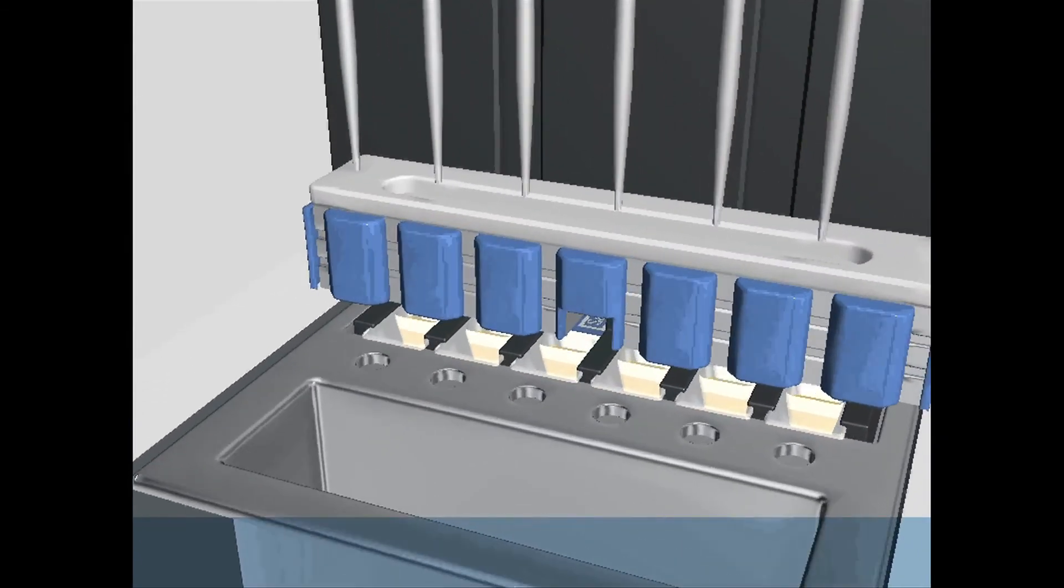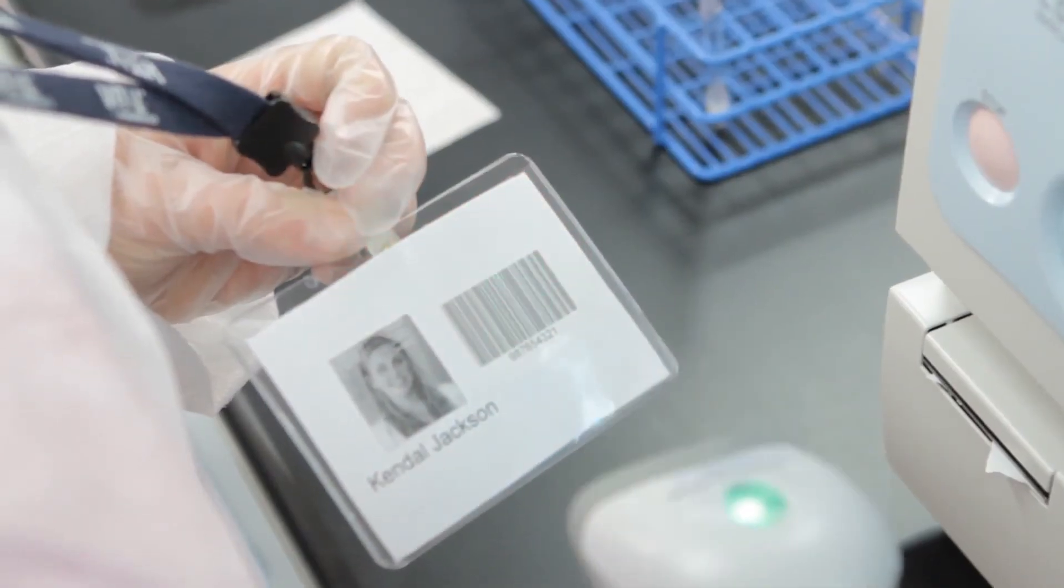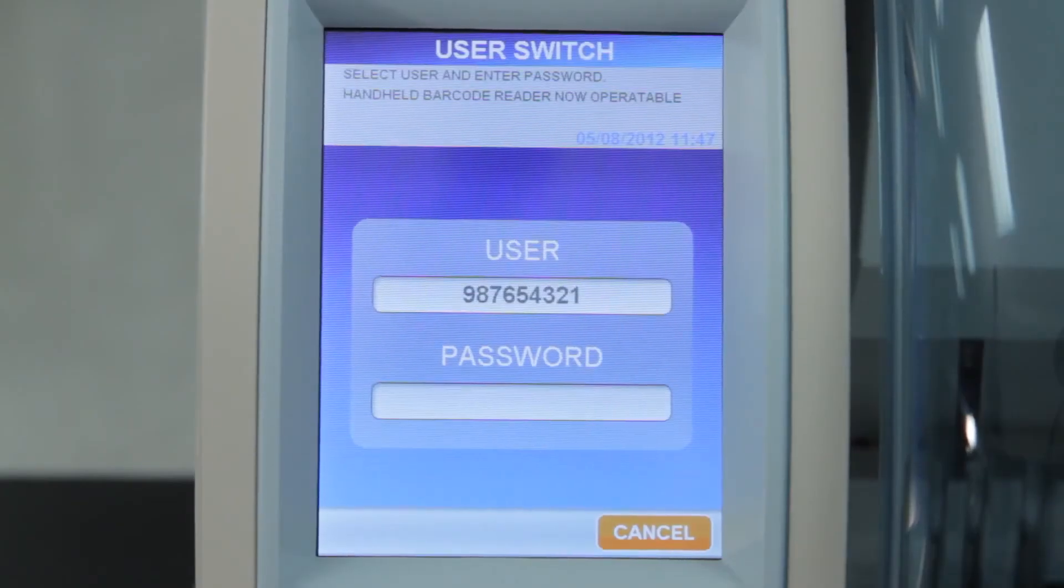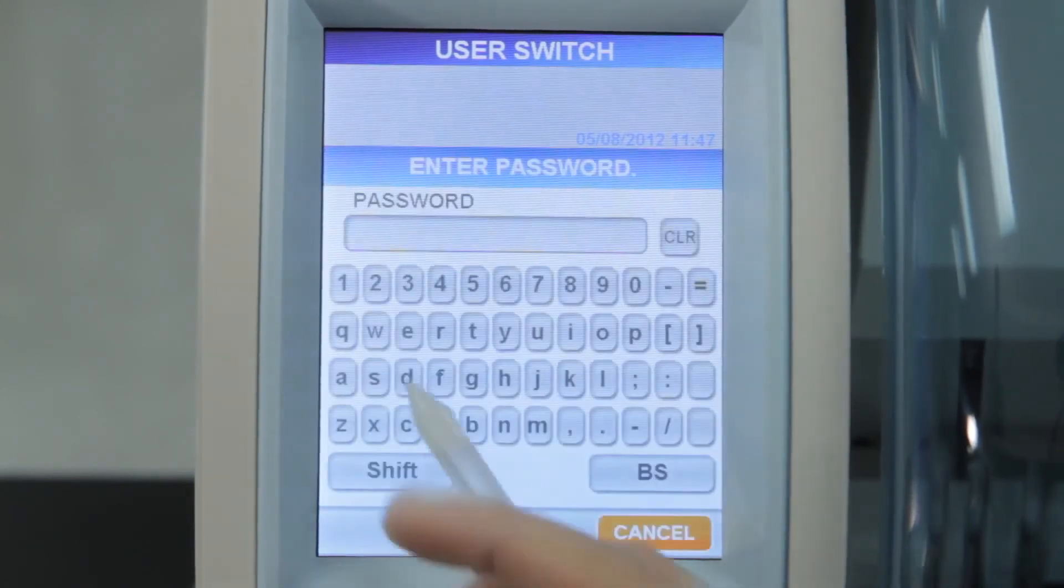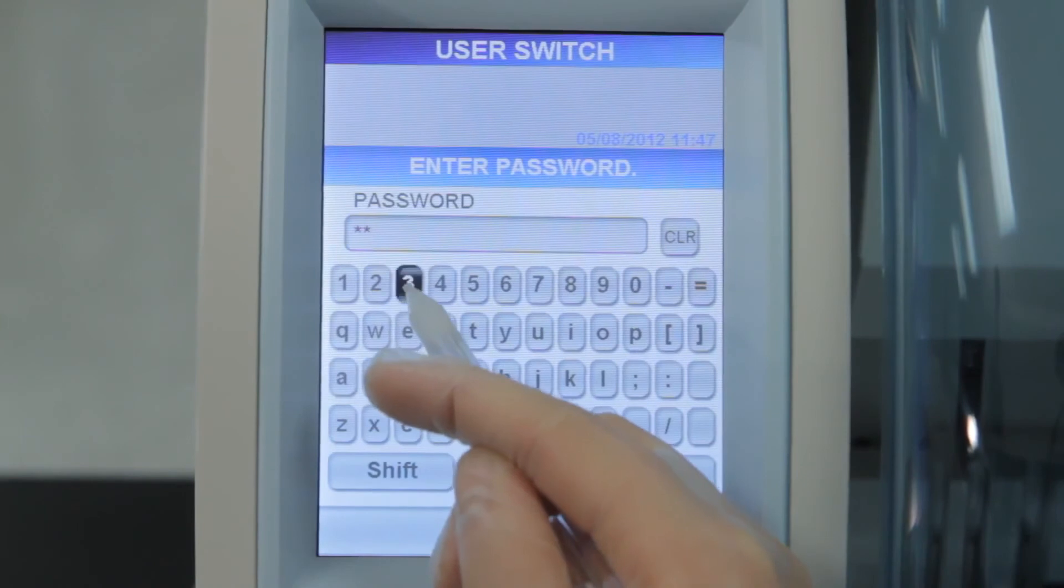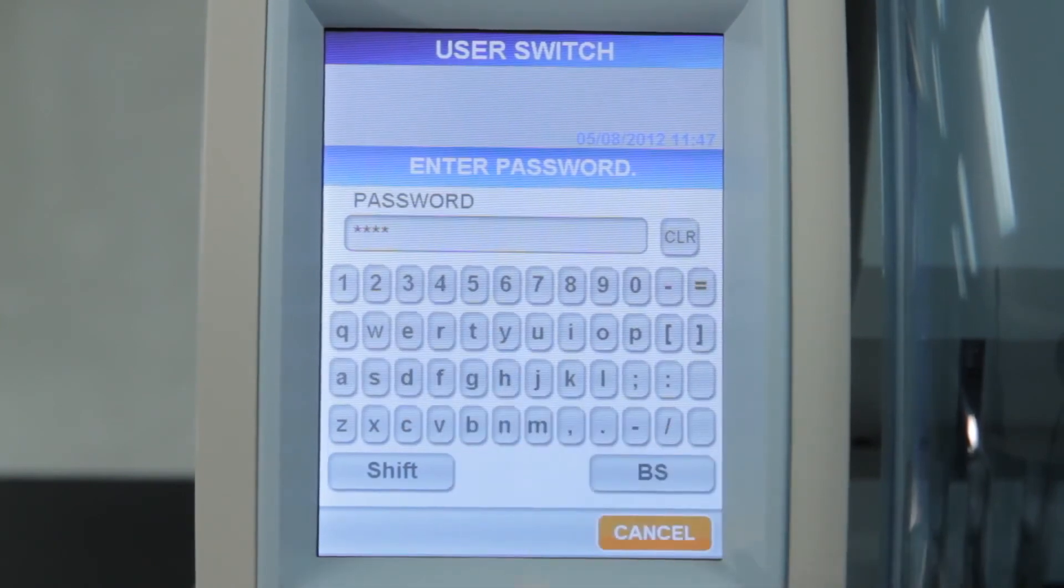PathFast uses chemiluminescent methodology with patented magtration technology. The PathFast offers a combination of security features. User ID and password features give you the peace of mind that unauthorized users cannot operate the system. The settings are user defined.